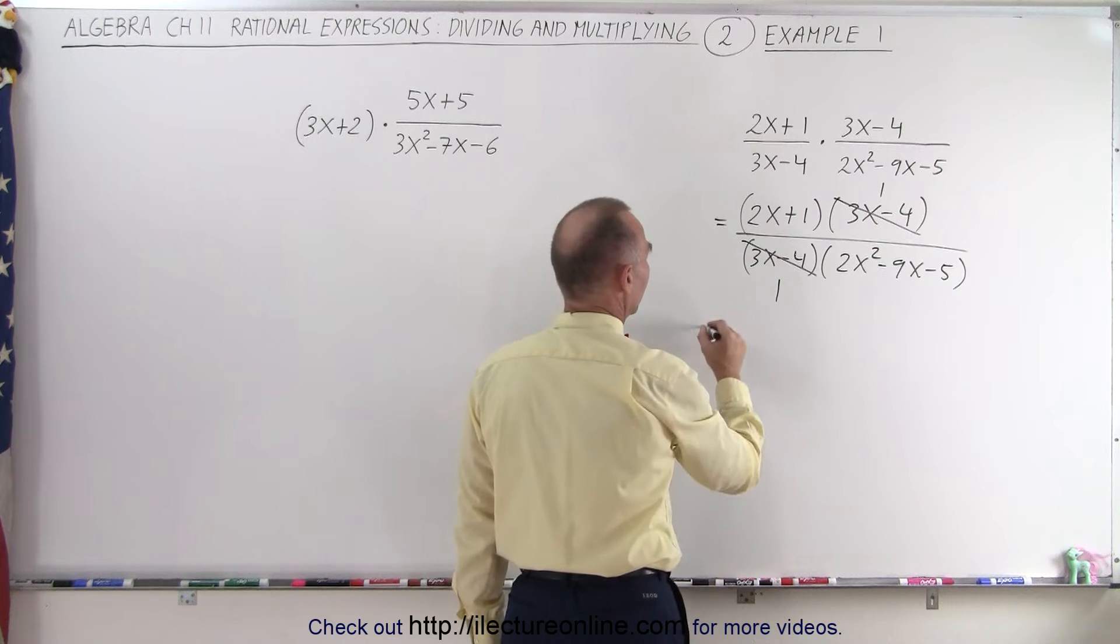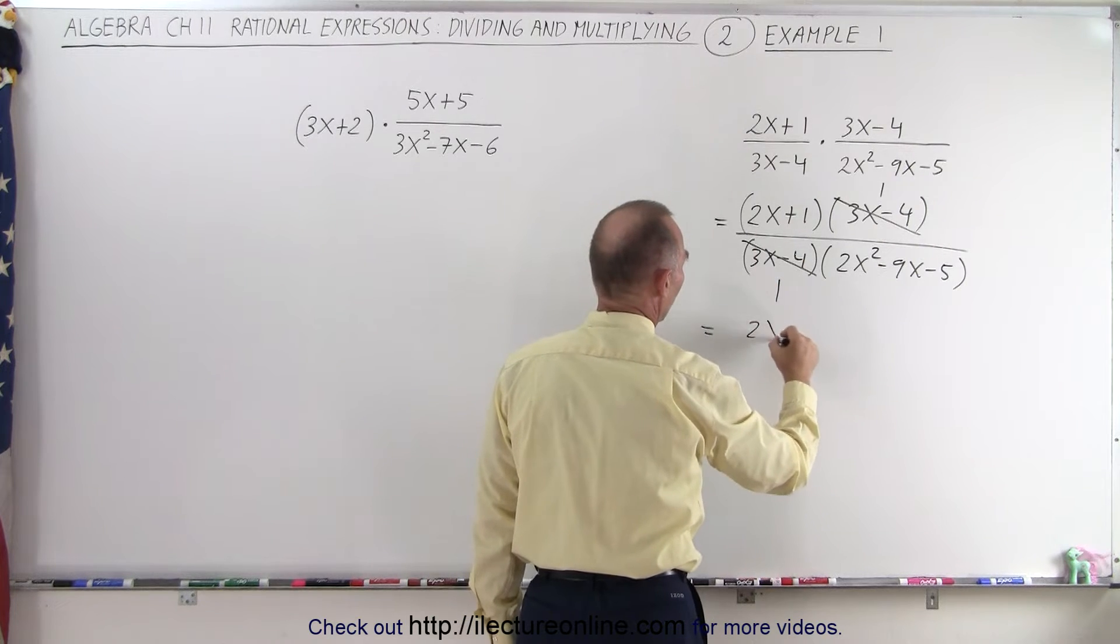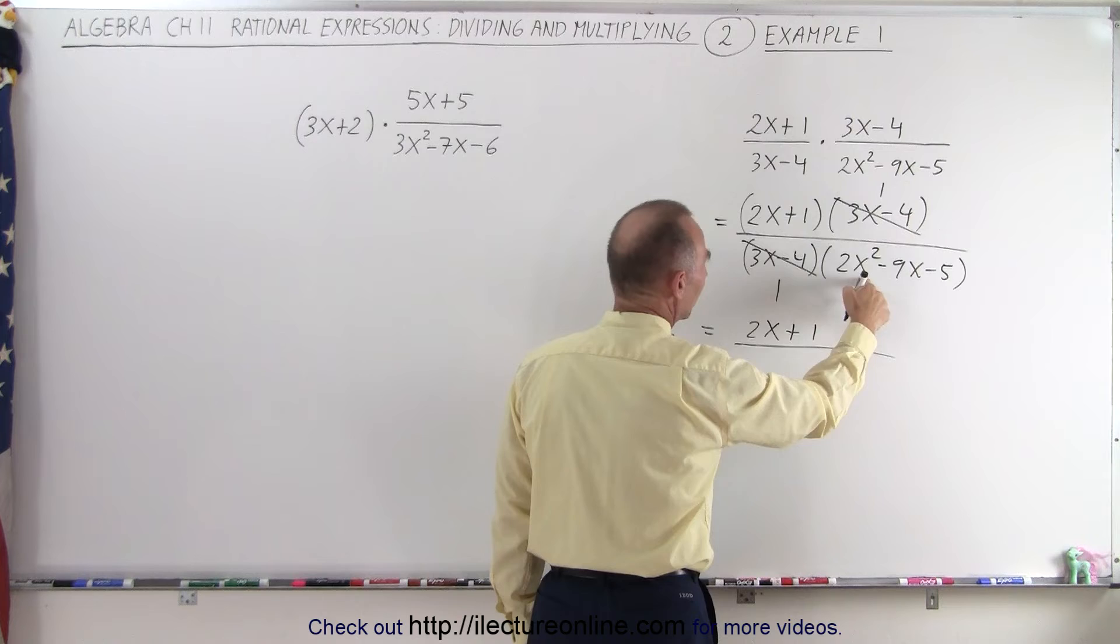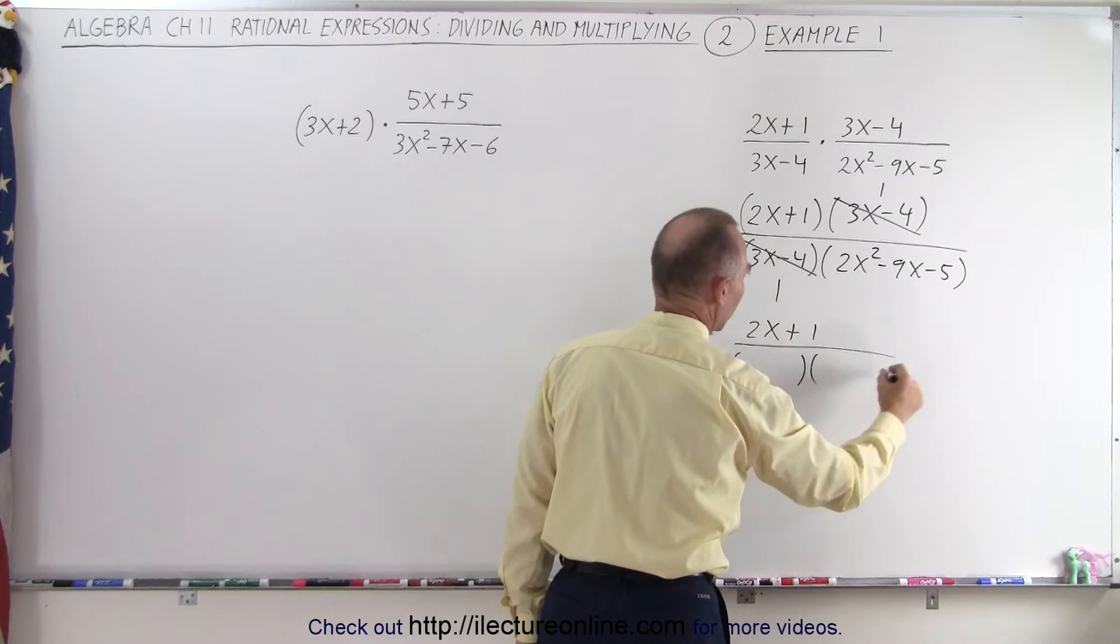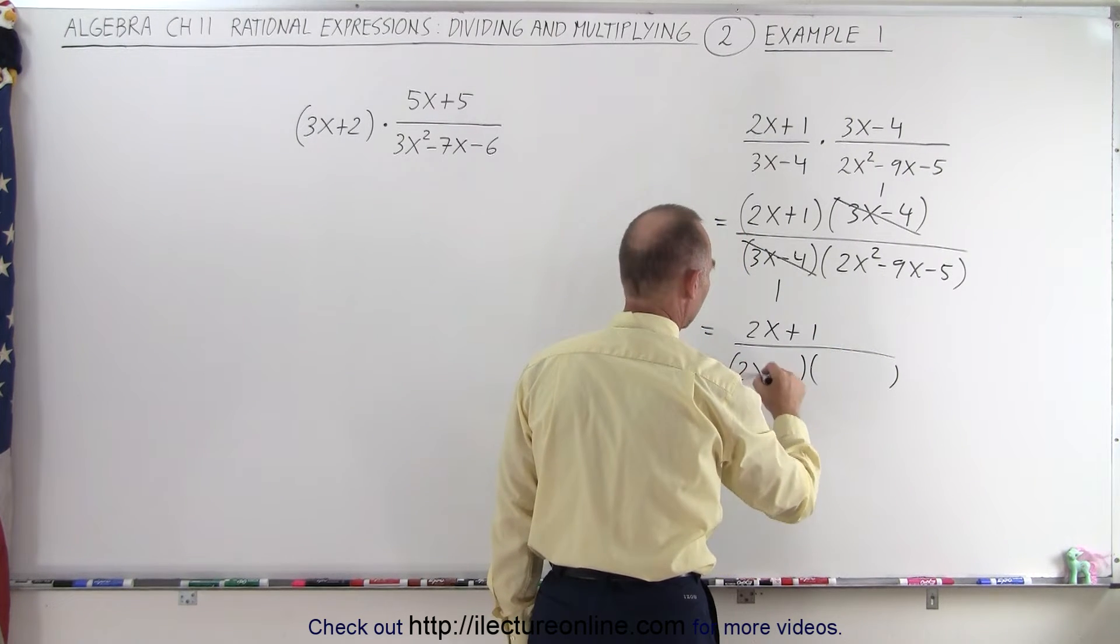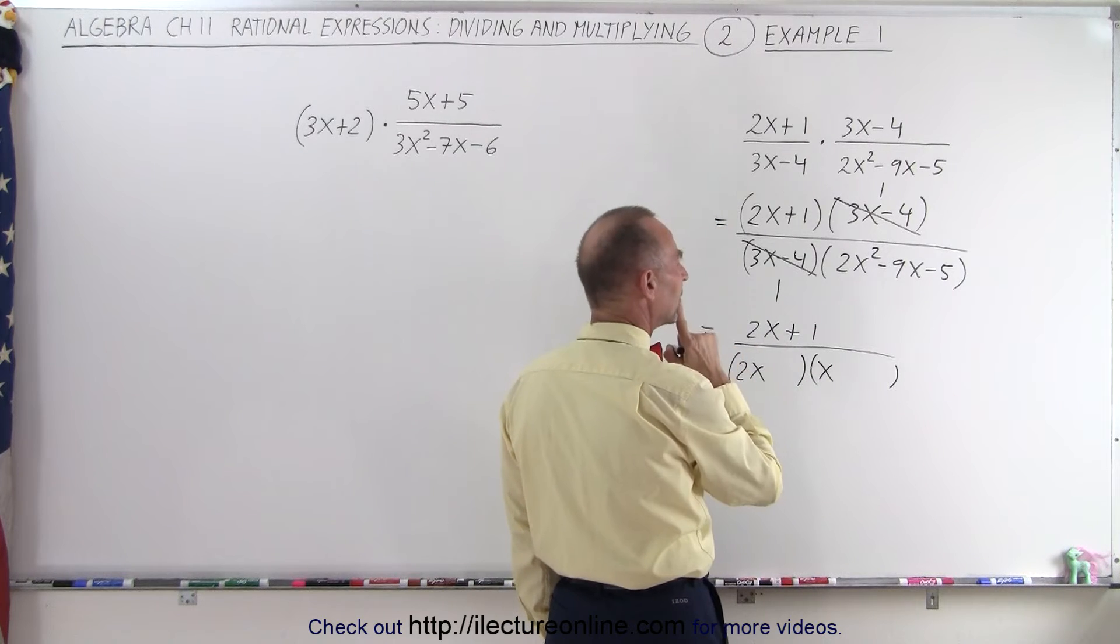Let's divide, and so this can now be written as 2x plus 1 in the numerator, and this can be factored into the product of two binomials. 2x, x, the sign should be plus and minus.